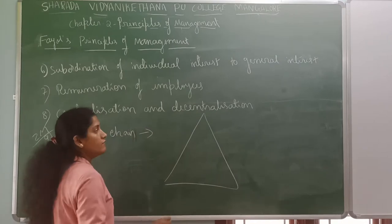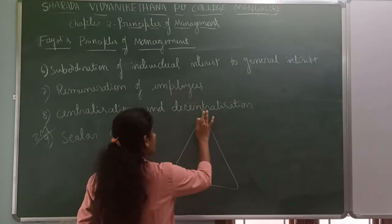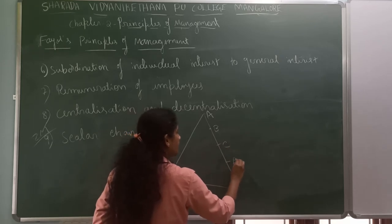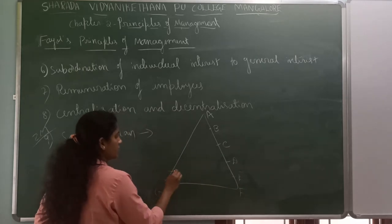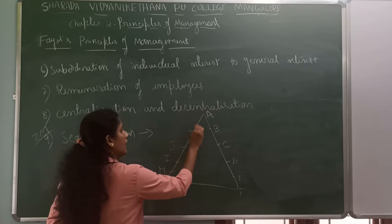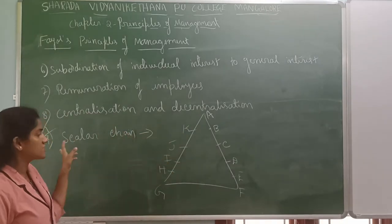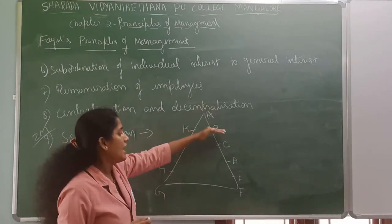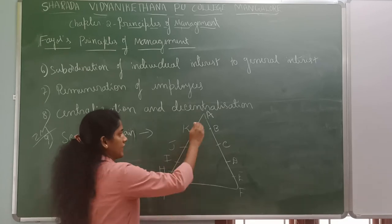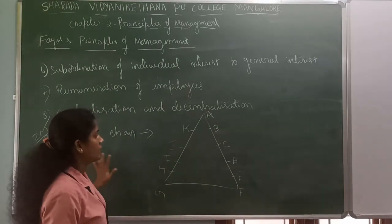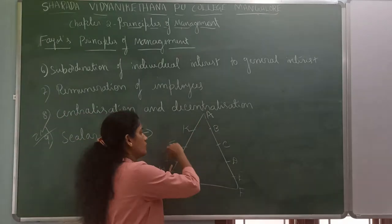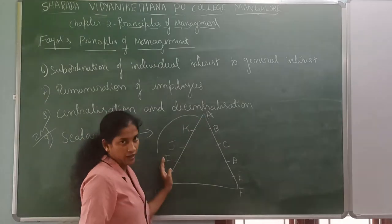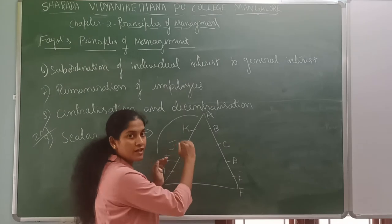For example, you have a company where the authority is in the hands of Mr. A. Below A we have B, C, D, E, and F. Below that we have G, H, I, J, and K. Scalar chain tells that authority should flow from the top level to the lower level. If A is the top level CEO and someone wants to communicate with H, they have to go through J, K, and then reach up — they cannot directly go to the top level because there are levels in the organization.